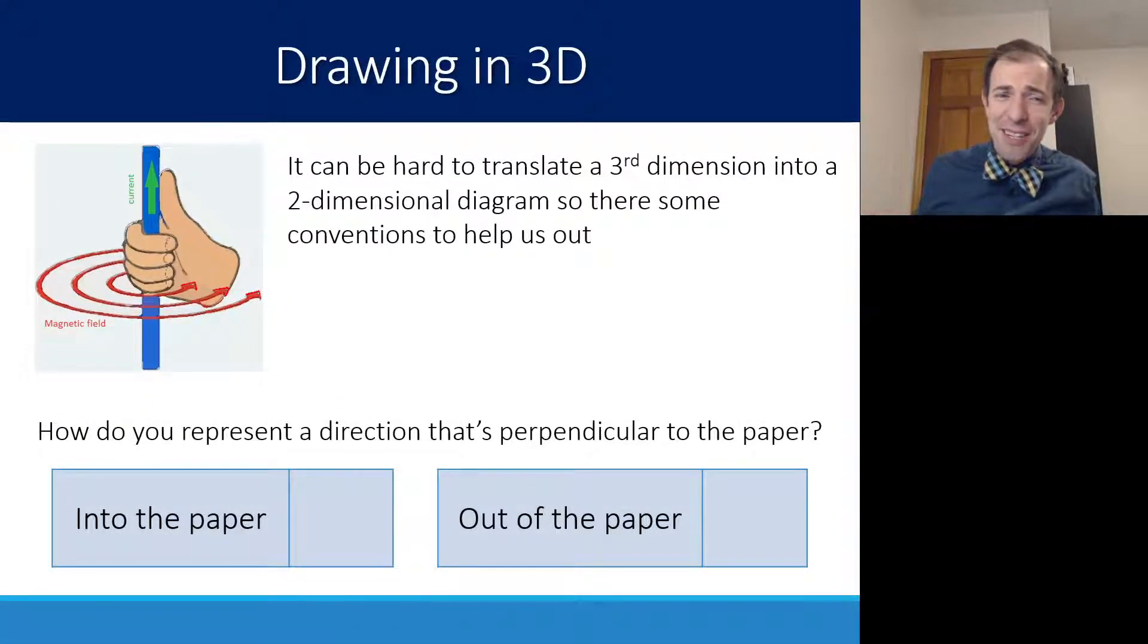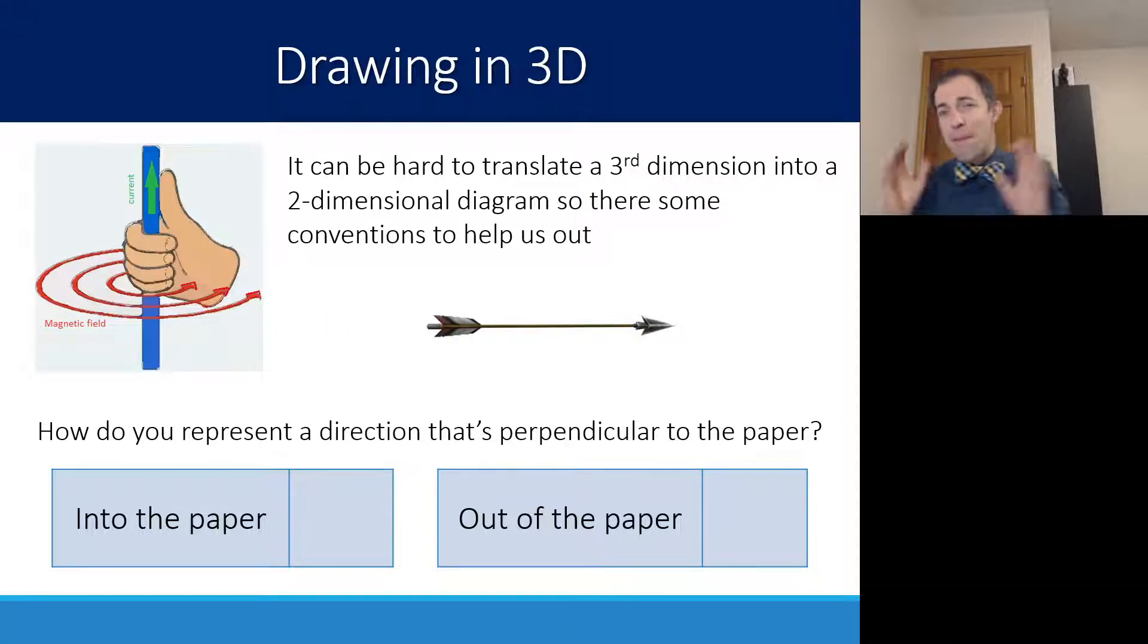This can be kind of tricky because it requires us to draw in 3D. It's pretty easy to draw a vector if it's going in some direction that you can see pointed on a piece of paper or on a slide. But it's pretty hard to draw a vector that's coming straight at you or coming away from you or toward you. We do have techniques to do this. One way that I like to remember this technique is to think of an arrow, like bow and arrow.